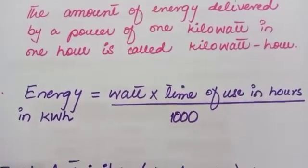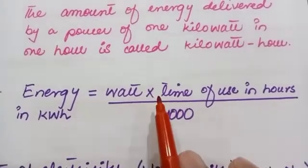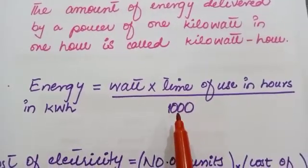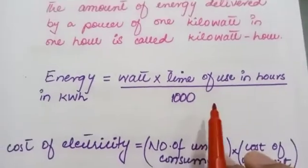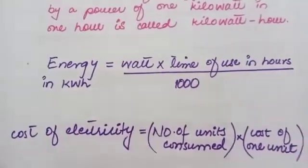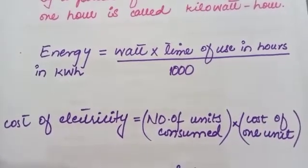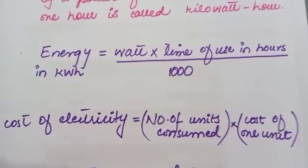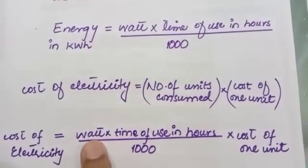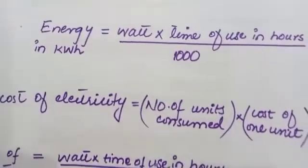Energy can be calculated in kilowatt-hours. For that we need to know the power in watts and the time of use in hours. The formula is: Energy (kWh) = Power (watts) × time of use (hours) / 1000. By this formula we can calculate the number of units consumed. If we know the number of units and the cost of one unit, the cost of electricity equals number of units consumed multiplied by cost of one unit.